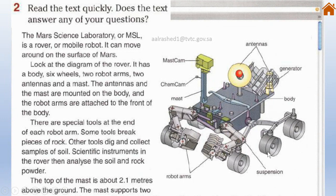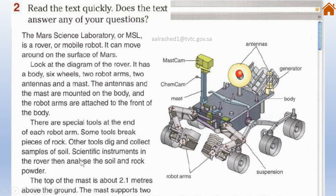Every car has suspension consisting of brakes, shock absorbers, and wheels, with items that vary among cars. There are special tools at the end of each robot arm. Some tools break rocks, and other tools dig — taking out dust and rock and going deeper into the ground.